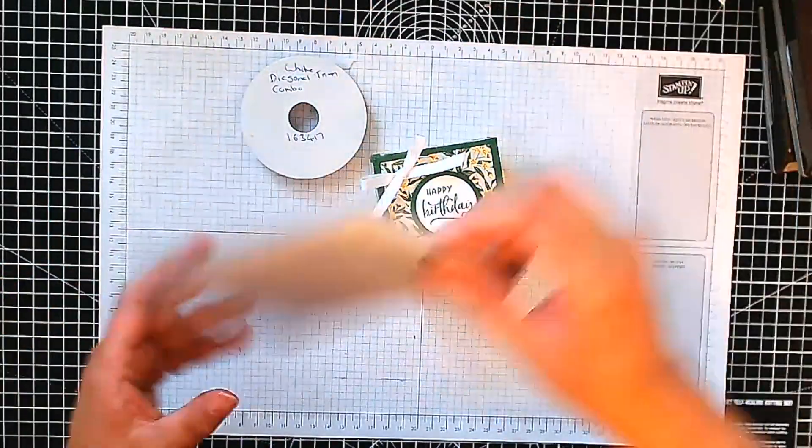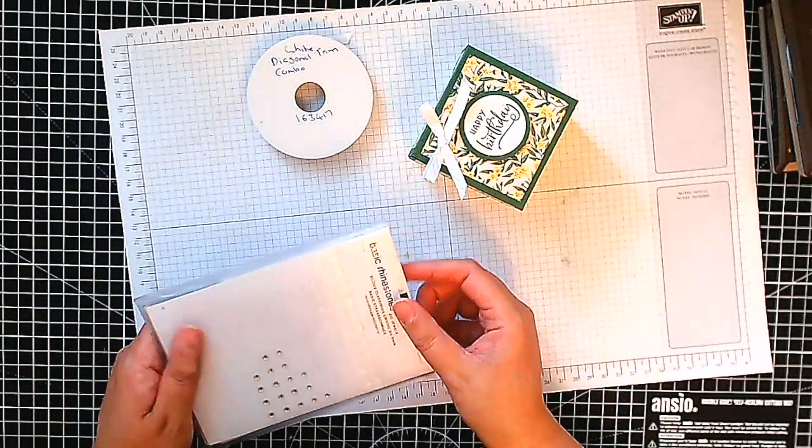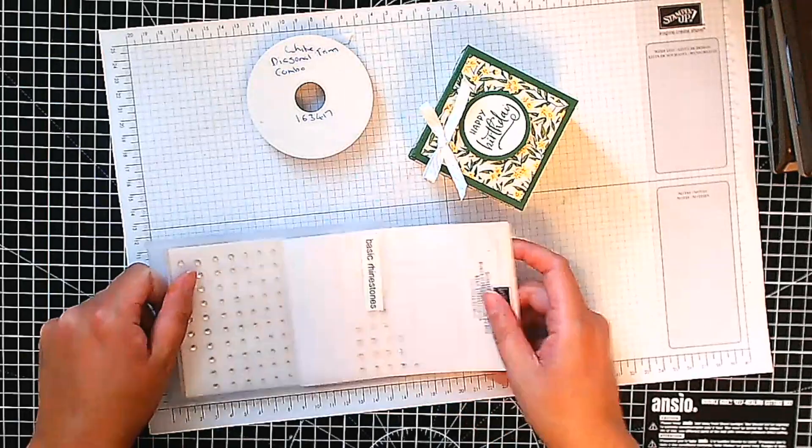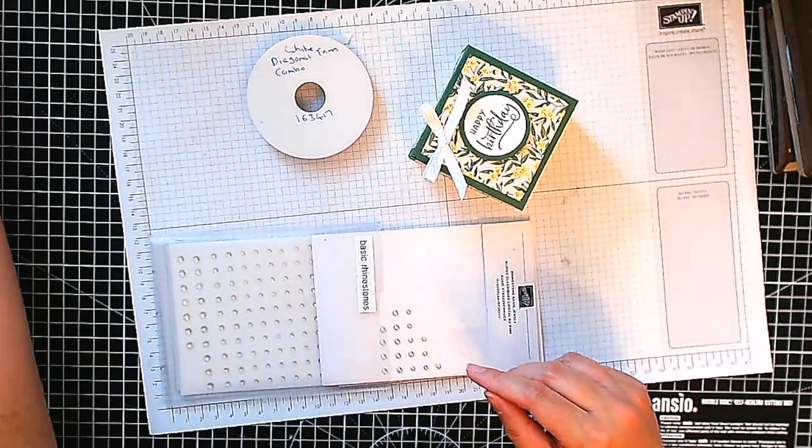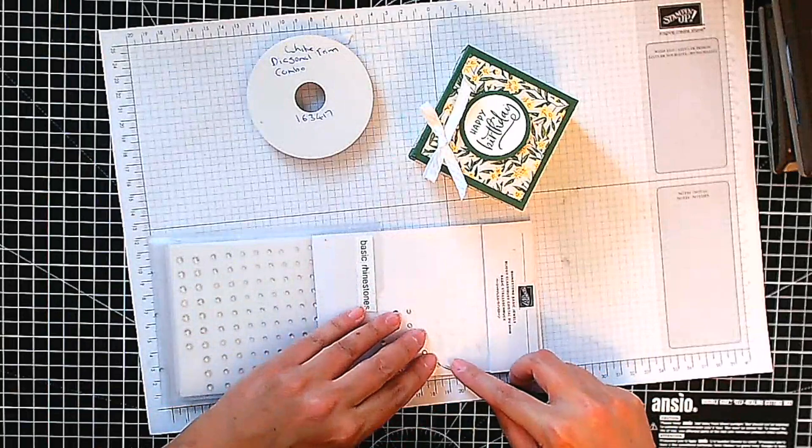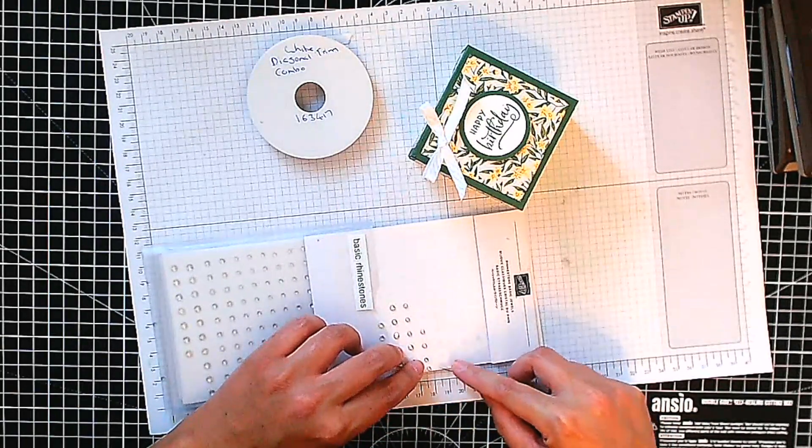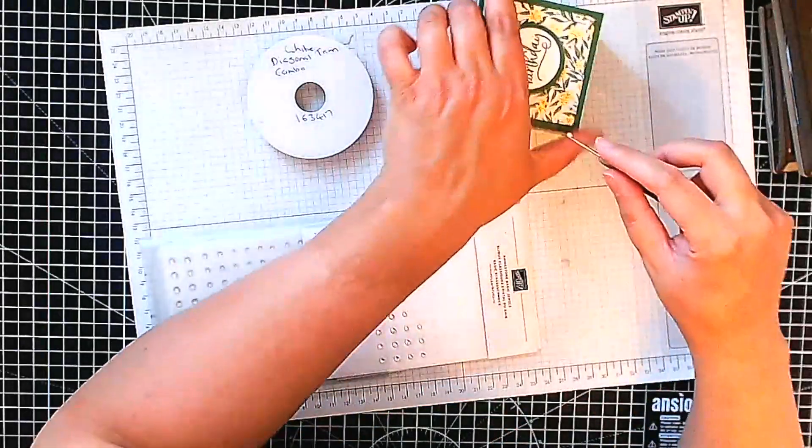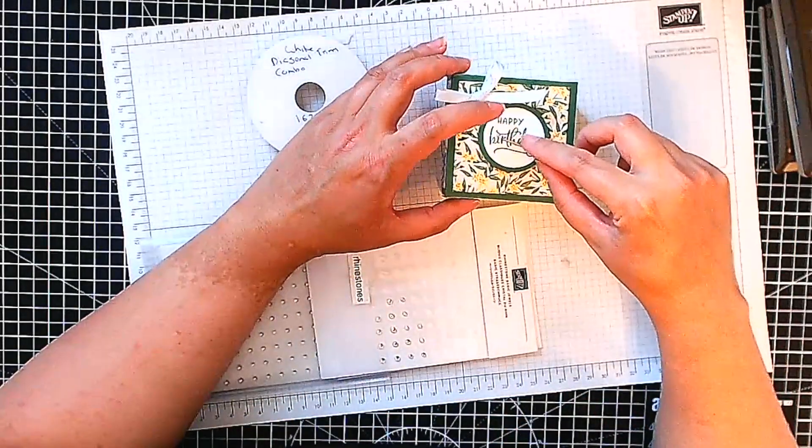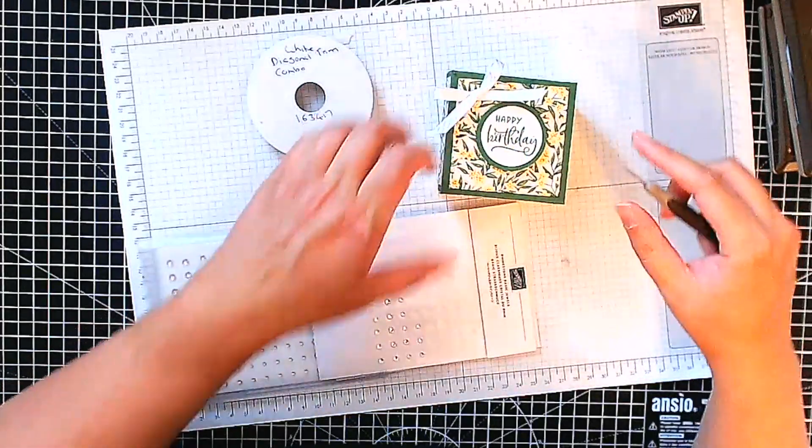And then I have some rhinestones here and I'm just going to use the smaller one here. Come here, come here. Oh, it doesn't want to find any home on my project, but it's going to. There we go. So there are our two boxes. I hope you like that.